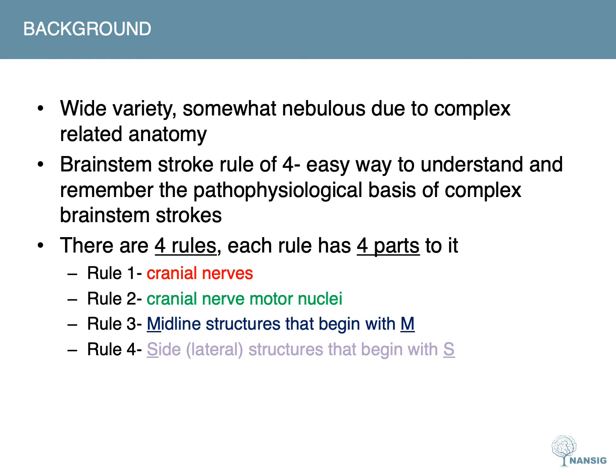The brainstem has pretty complex regional anatomy, so I've come across this brainstem rule of four, which I'm emphasizing because it's a really good way of understanding the complex anatomy related to these brainstem stroke syndromes. There are four rules, each with four parts: rule one is to do with cranial nerves, rule two with cranial nerve motor nuclei, rule three with midline structures beginning with M, and rule four with side or lateral structures beginning with S.